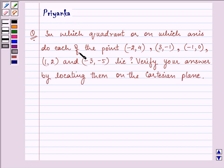do each of the points (-2, 4), (3, -1), (-1, 0), (1, 2), and (-3, -5) lie?